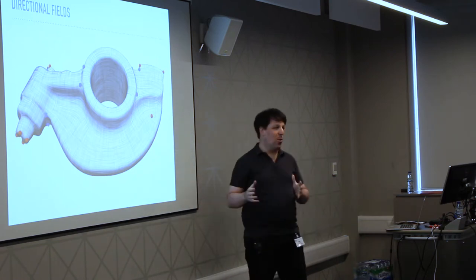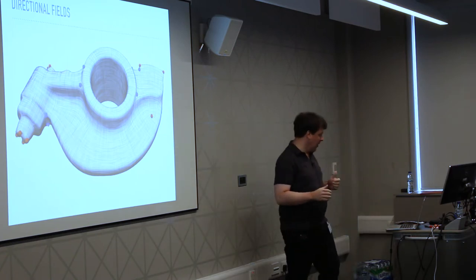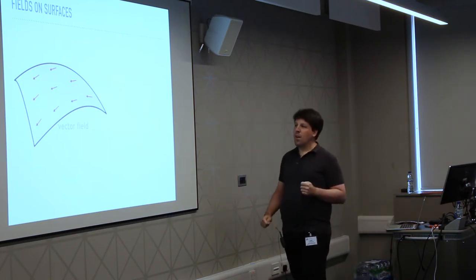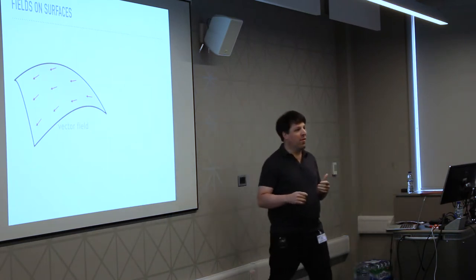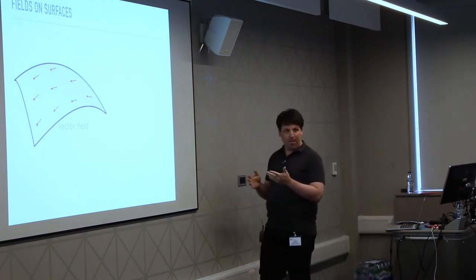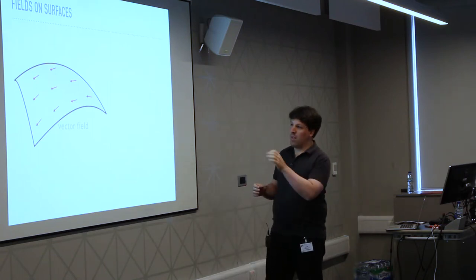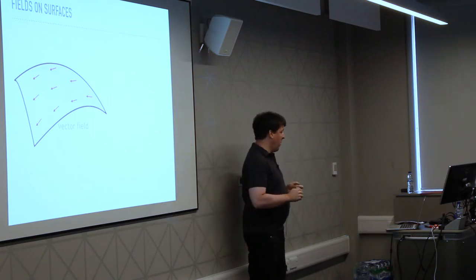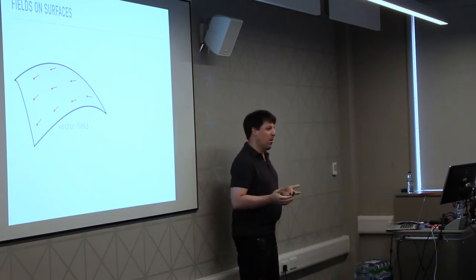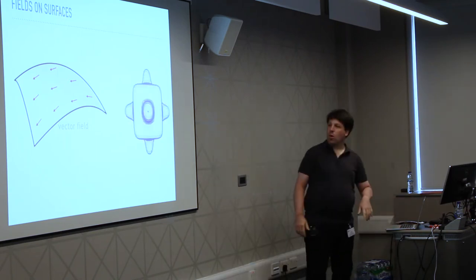That is on one level what directional fields look like. The word 'field' means the assignment of a vector or directional entity per point of the surface — one for every point. What's a point on a surface is also part of the problem we'll talk about today. In this case, it is continuous.